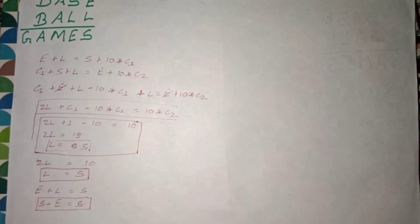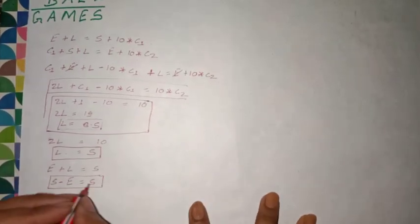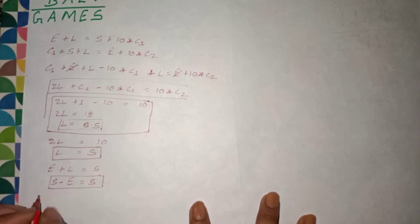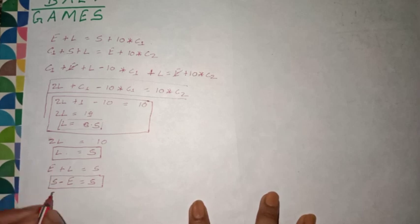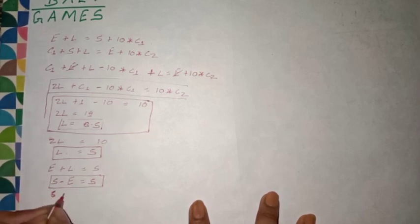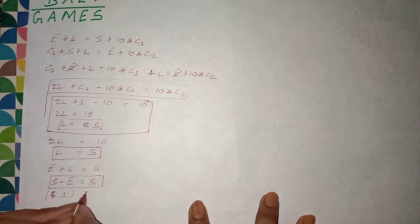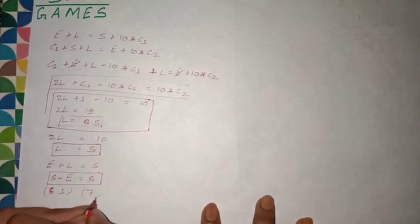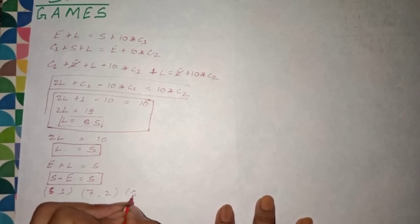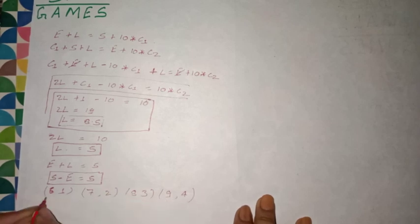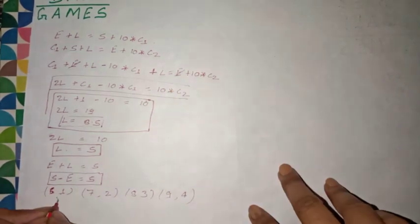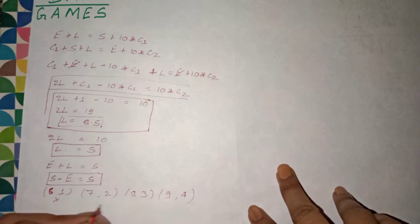We check possible values for S and E. From S equals E plus 5: not 5 because L is already 5, but we can have 6 and 1, 7 and 2, 8 and 3, 9 and 4. Not 6 because G is already 1. So we have three possible values.